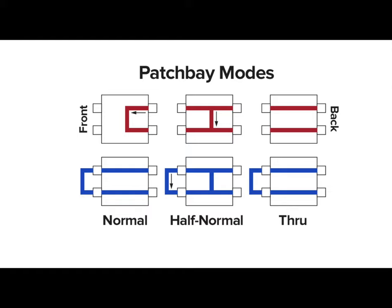The next is half normal. When the patch bay is half normal, it acts similar to when being normal. The difference occurs when the patch cable is fed into the patch bay — the cable no longer breaks the signal, but instead splits it. One end of the split is still passing through, while the other end of the split is free to be routed elsewhere.